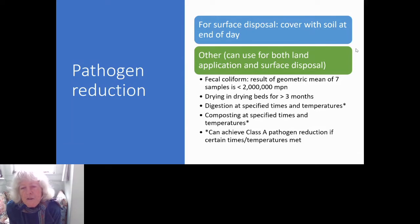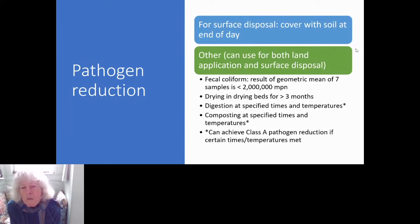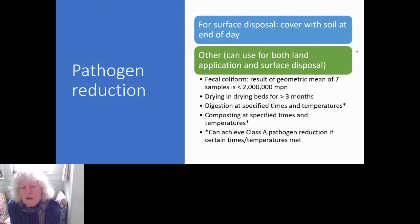There are two classes of pathogen reduction: Class B is suitable for land application on non-food crops, and Class A is considered pathogen-free so you can distribute it to the general public. If you digest or compost at high temperatures you can achieve Class A — this is spelled out in the rule as to what times and temperatures you need to meet. The Hoopa Tribe was looking at composting at high temperatures for future septage and wastewater solids, so the resulting compost could be used without further restrictions.